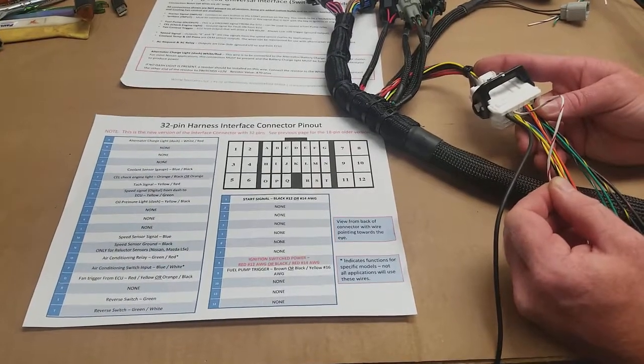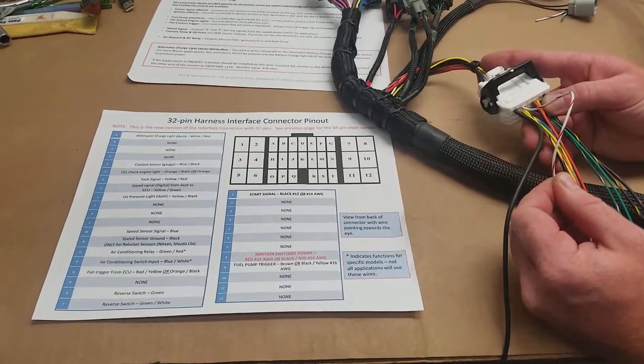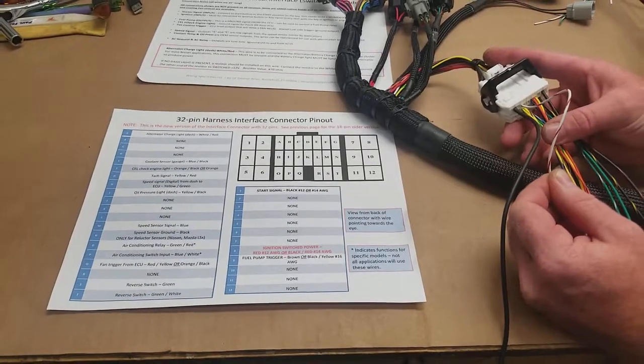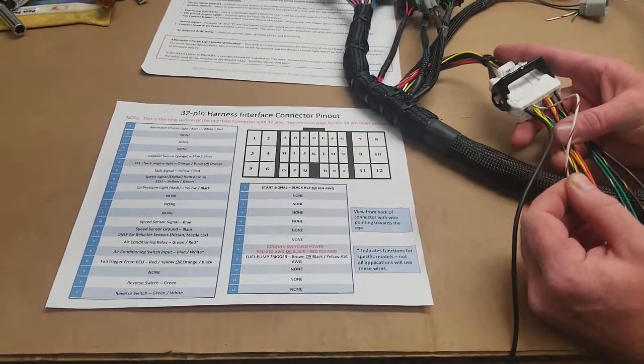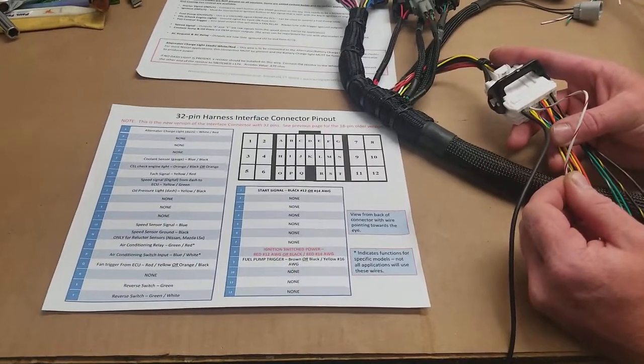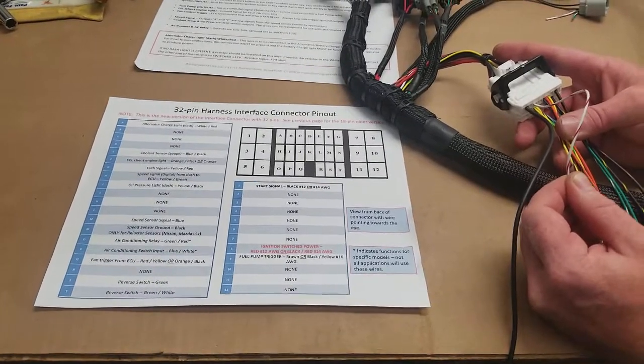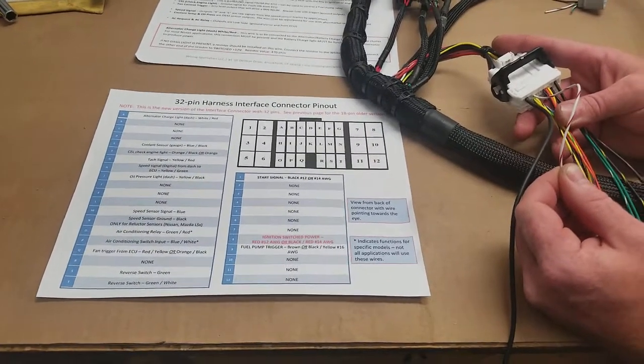Now, in a Nissan application, this will have to be hooked up to a bulb in your dash. The other side of the bulb will be 12-volt ignition power, or you can hook it up to a 470-ohm resistor. Your alternator will not charge without this wire hooked up.